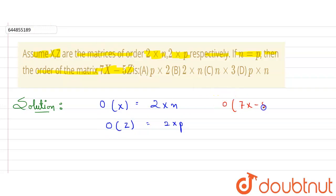Let's find order of 7X matrix. It is obvious that if I multiply this X matrix with 7, then the order will remain the same. There will be no change in the order, so order will be 2 × n.